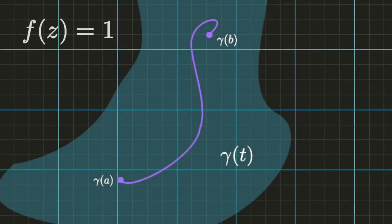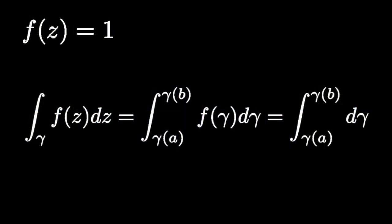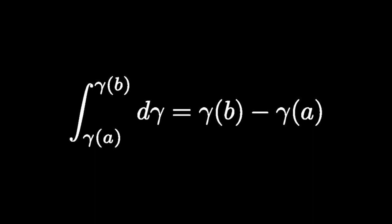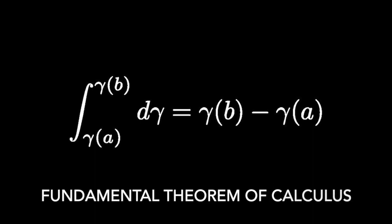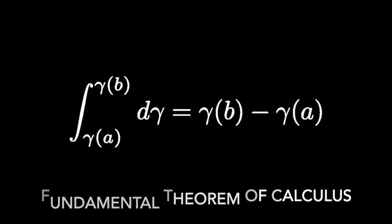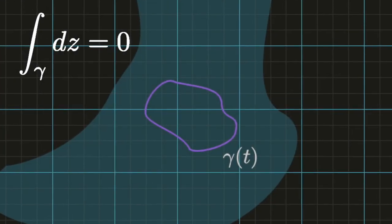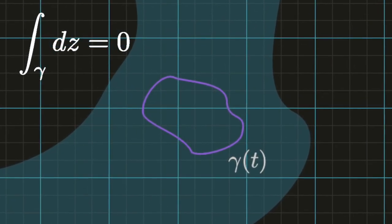Let's consider the case that f is the constant function equal to 1. Applying the definition of the complex integral and substituting 1 for f, we arrive at the integral of d gamma from a to b, which is just the fundamental theorem of calculus. This shows that the integral of dz around a closed curve equals 0, since the endpoints of the curve coincide.